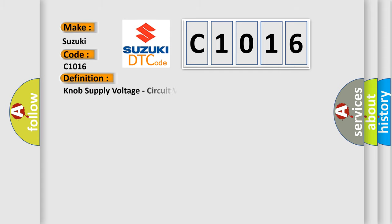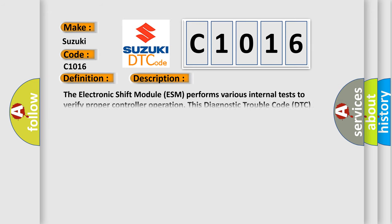The basic definition is knob supply voltage circuit voltage below threshold. And now this is a short description of this DTC code.